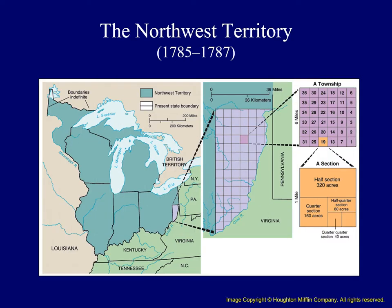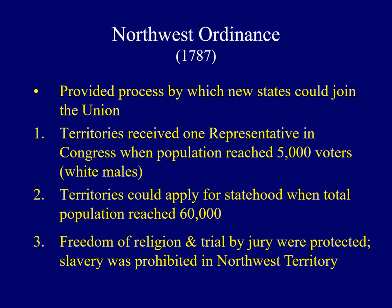Each of the states included in the Northwest Territory followed this path to statehood. Additional regulations were also included in the Northwest Ordinance. There were protections of civil liberties such as freedom of religion and the right to a trial by jury for those living in the territories. Another provision outlawed slavery in the Northwest Territory. Taken together, the Northwest Ordinance was probably the most important accomplishment of the Articles and its legacy has been long-lasting.